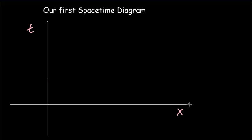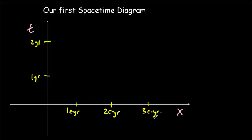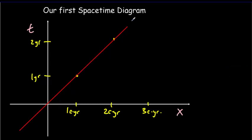Let's draw the path of a photon of light. Light goes really, really fast, so if we choose our scales wrong, the beam of light would just run along the x-axis. We'll choose our scale with time in years and position in light years. In one year, light travels one light year; in two years, two light years. We get a line for light with a slope of one — at a 45-degree angle.